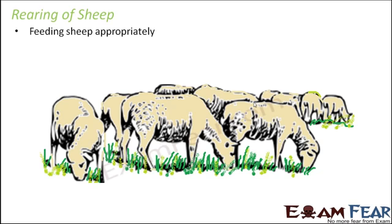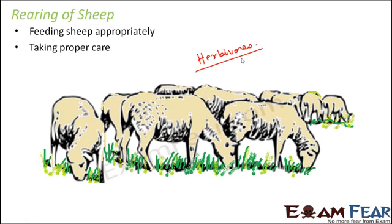Sheep are generally herbivores, so they mostly feed on grasses, leaves, and plants — they are directly dependent on plants. However, they also feed on pulses, corn, grains, and dry fodder. It is equally important to maintain proper hygiene, because if hygiene is not maintained, there are chances they might get infected with diseases, which would make them ill and also reduce the productivity of wool.